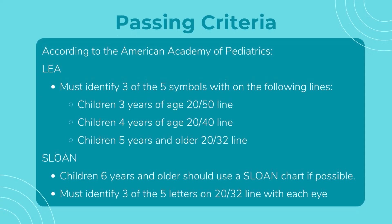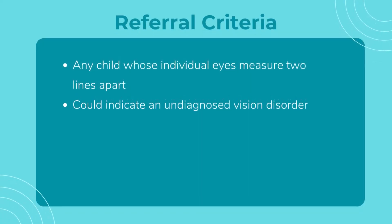According to the American Academy of Pediatrics, if using a LEA symbols chart, each child must identify three of the five symbols on the following lines to be considered passing: children three years of age — 20/50 line; children four years of age — 20/40 line; children five years and older — 20/32 line. Children tested using a Sloan chart must pass the 20/32 line. You will also refer any child where the eyes are measuring with a difference of two lines from each other, as this signifies a larger disparity which could indicate an undiagnosed vision disorder.